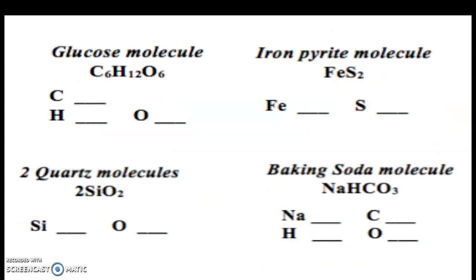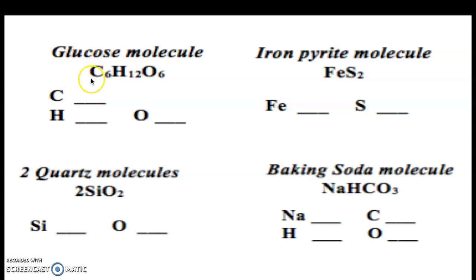Here are some other examples to try. If you want, you can try drawing out what you think the model might look like, but it's not necessary. You can just look at the chemical formula and count off the atoms that way. Pause the video and give it a shot yourself if you need to. This is a glucose molecule. The chemical formula for glucose is C6H12O6. This is just one molecule of glucose — we know that because there's no other number in front telling us otherwise.